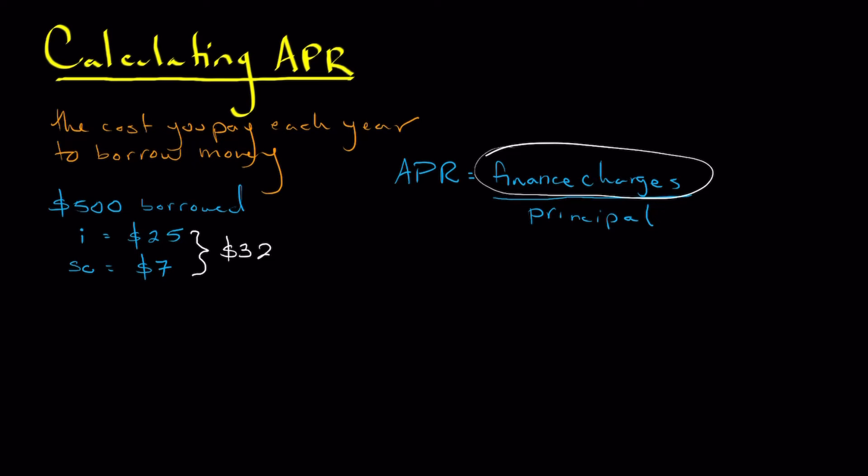Moving forward with the formula, in order for us to figure out our APR, we're going to take those $32 in finance charges, and we'll divide that by our $500 principal. Now going through the math and the calculations, you should get 0.064. Or if you express as a percentage, remember APR is designed to be expressed in percentage form, that is 6.4%.